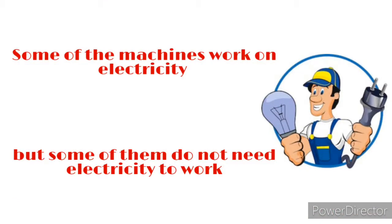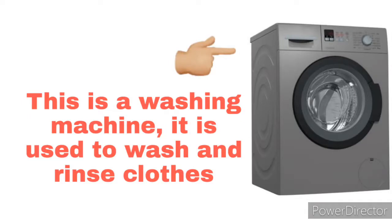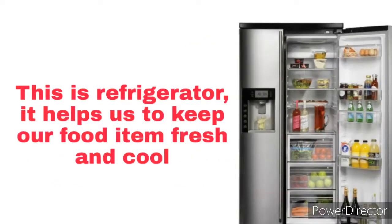Some of the machines work on electricity, but some of them do not need electricity to work. Machines that need electricity to work are: this is a washing machine — it is used to wash and rinse notes. This is a refrigerator — it helps us to keep our food items fresh and cool.